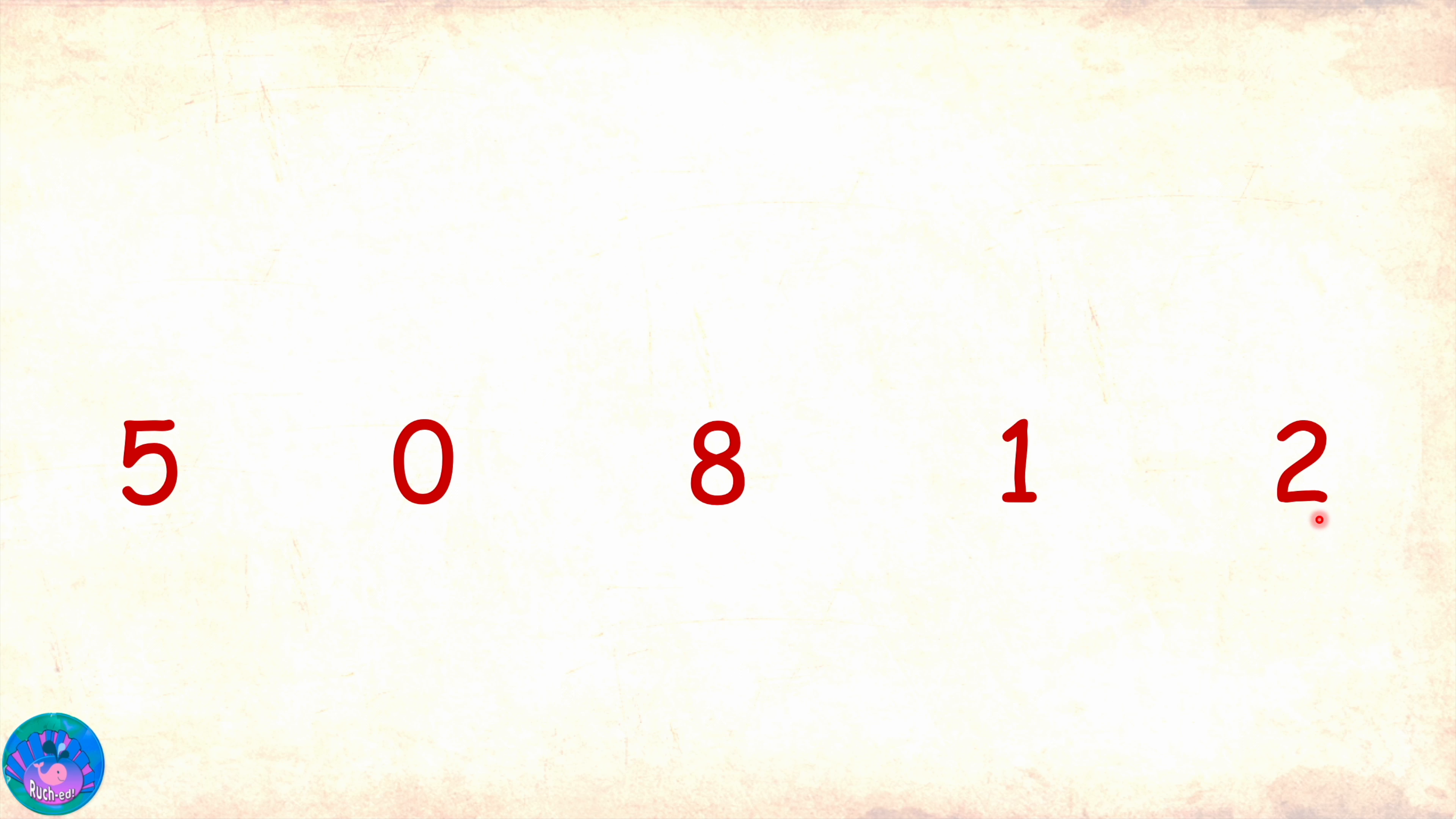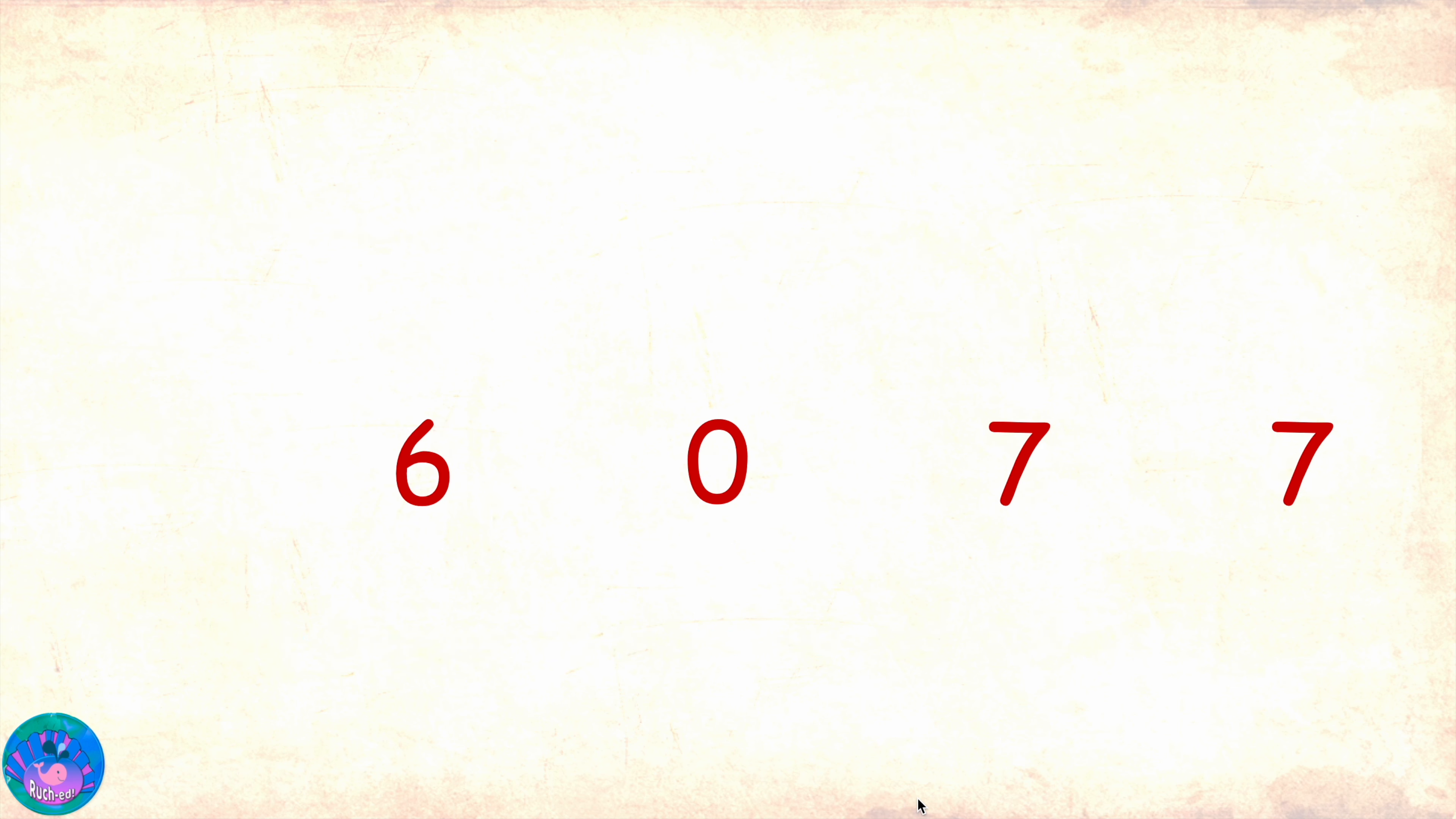Well done, Sam. Let's see another one. 50,812. A five digit number. So, here we have digits in ones, tens, hundreds, thousands and ten thousands place. We have 812 in the ones period and 50 in the thousands period. We need to put a comma between the two periods and to read it, it will be 50,812.